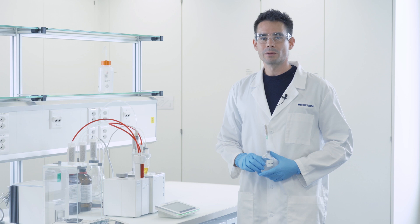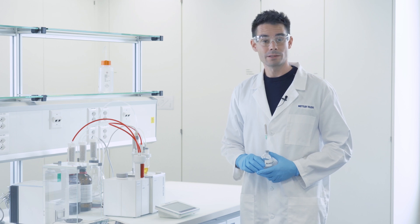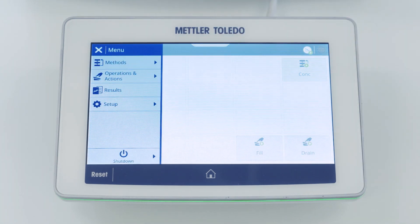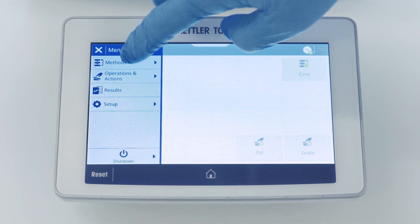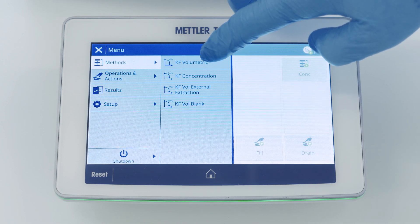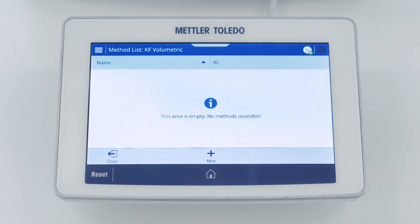To determine the water content of our sample we first need to create a method on our instrument. This is very easy and I show you how to do it on an EVA titrator. First go to the menu and we find the methods and the normal volumetric Karl Fischer methods in a list. Now our list is empty because we haven't created a method yet. To create a new method just click on new.